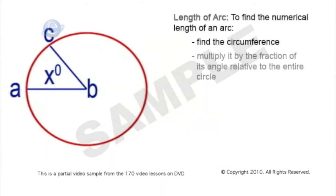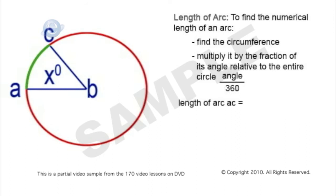Now, what if we want to solve for the actual length of the arc — not in degrees, but in meters, centimeters, inches, or whatever unit of measurement? To find the numerical length of an arc, find the circumference, then multiply it by the fraction of its angle relative to the entire circle, which is angle divided by 360 degrees. So the length of arc AC is simply 2πr times the ratio of angle x to 360 degrees. We need the radius and the value of angle x.